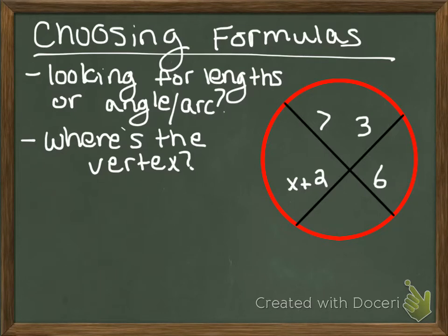You have one formula sheet that allows you to find segments and then you have one formula sheet that allows you to find angles and arcs. So when you're choosing which formula to use, you've got to look at the problem and determine what am I looking for? Am I looking for lengths or am I looking for angles and arcs? I'm going to look at this circle and we'll say I'm looking for lengths, so I'm going to look at the sheet that is the lengths of segments in circles.